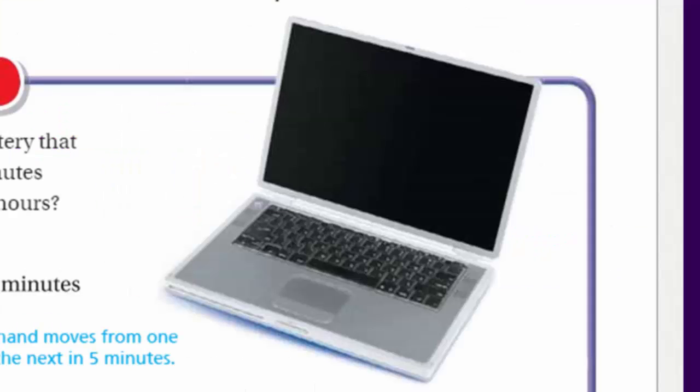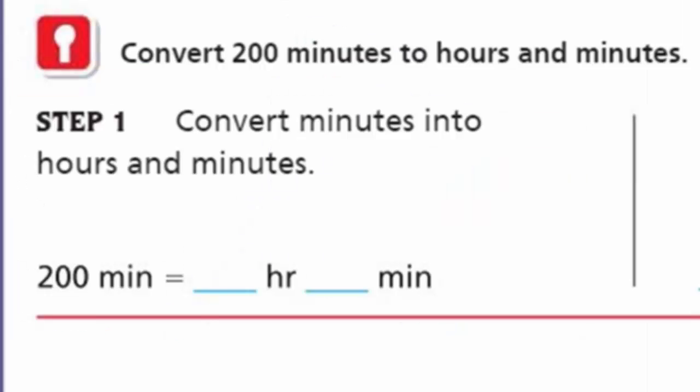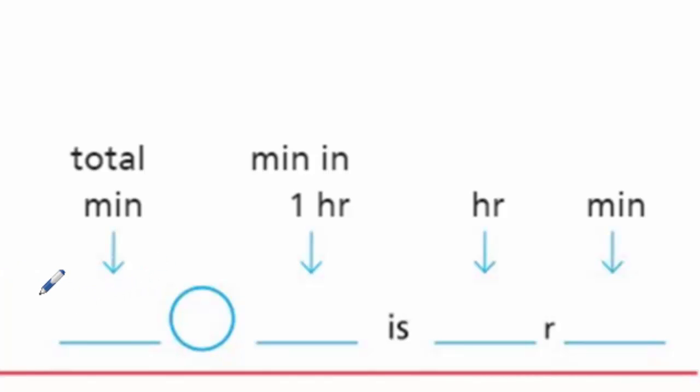For the graphic organizer, it says: convert 200 minutes to hours and minutes. Step one: convert minutes into hours and minutes. We have 200 minutes - we don't know how many hours that equals yet. If I put my 200 minutes here, we're going to divide because we are going from a smaller unit of time.